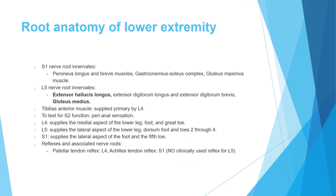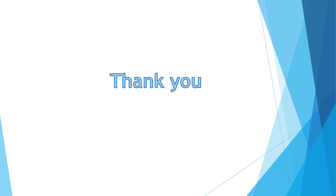To summarize: S1 — lateral and posterior compartment, gastrocnemius-soleus complex, Achilles reflex, gluteus maximus, small toe sensation. L5 — toe extensors, gluteus medius. L4 — tibialis anterior, anterior compartment, patellar reflex, big toe sensation. S2 — perianal sensation. L5 — toes two to four sensation. Thank you for listening to this lecture. I hope it will be beneficial for you in your exam and your clinical work.